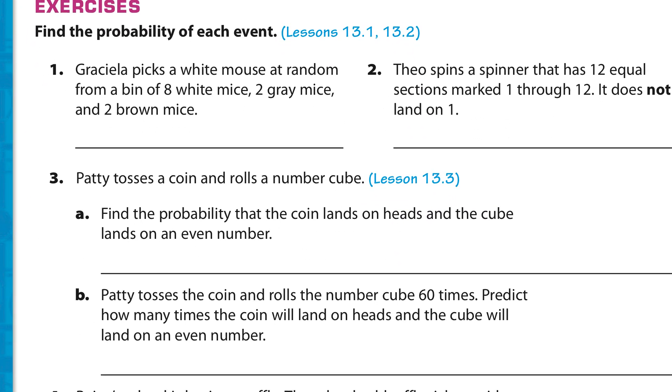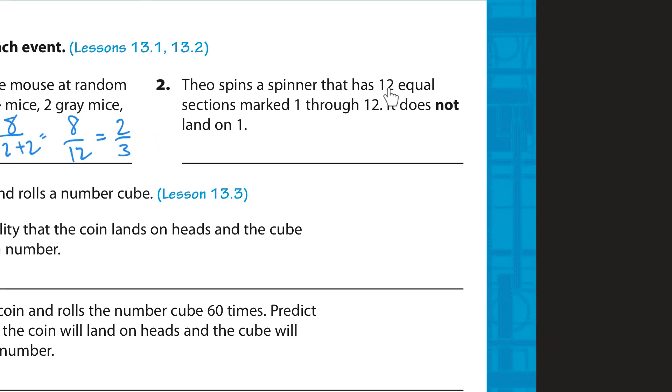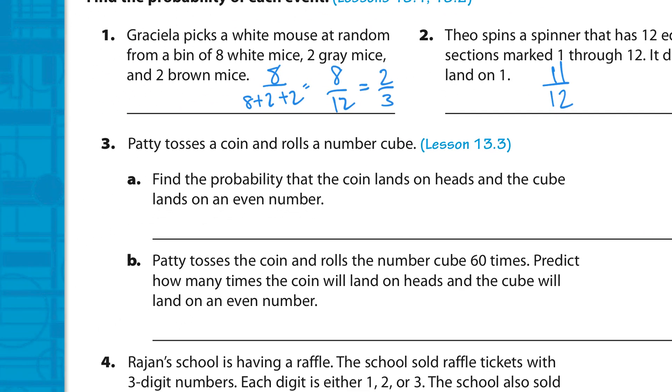Find the probability of each event. Graciela picks a white mouse at random from a bin of 8 white mice and 2 grey mice and 2 brown mice. So, what's the probability of her getting a white mouse? Well, there's 8 out of 8 plus 2 plus 2, which is 8 out of 12, which we could probably simplify to 2 thirds. Theo spins a spinner and has 12 equal sections marked 1 through 12. It does not land on 1. So, how many choices do we have? We have 11. 11 choices out of the total 12.